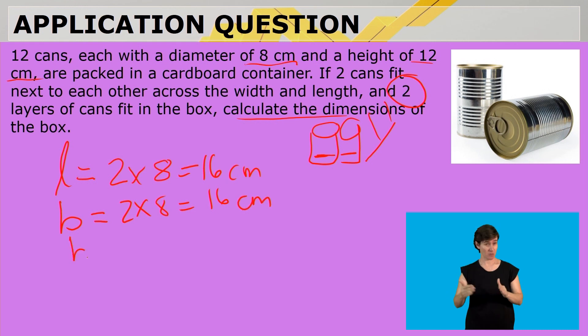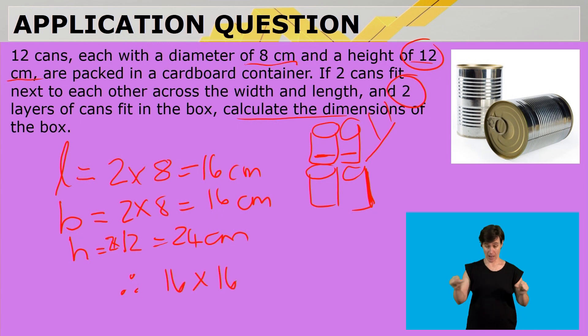And in the height, we'll see that they are stacked upon one another, so therefore, we're working with the height of the tin, and that is 12 centimeters. So, it's going to be 2 times 12, which is 24 centimeters, then the box must be 16 by 16 by 24.